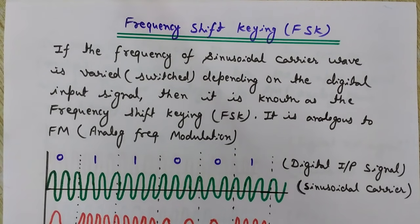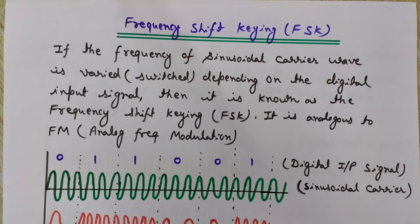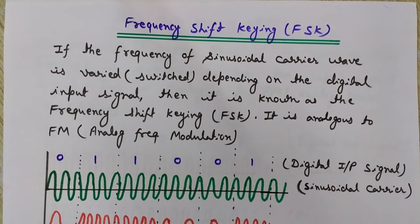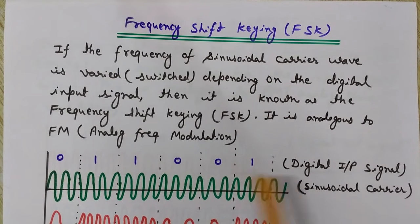Now we will see Frequency Shift Keying, FSK. In FSK, the frequency of the sinusoidal carrier wave is varied or switched depending on the digital input signal. FSK is analogous to FM, which is analog frequency modulation. In FM, the frequency of the carrier wave is varied according to the instantaneous value of the modulating signal. In FSK, the difference is that the modulating signal is digital, so we switch the frequency of the sinusoidal carrier wave according to the digital input.